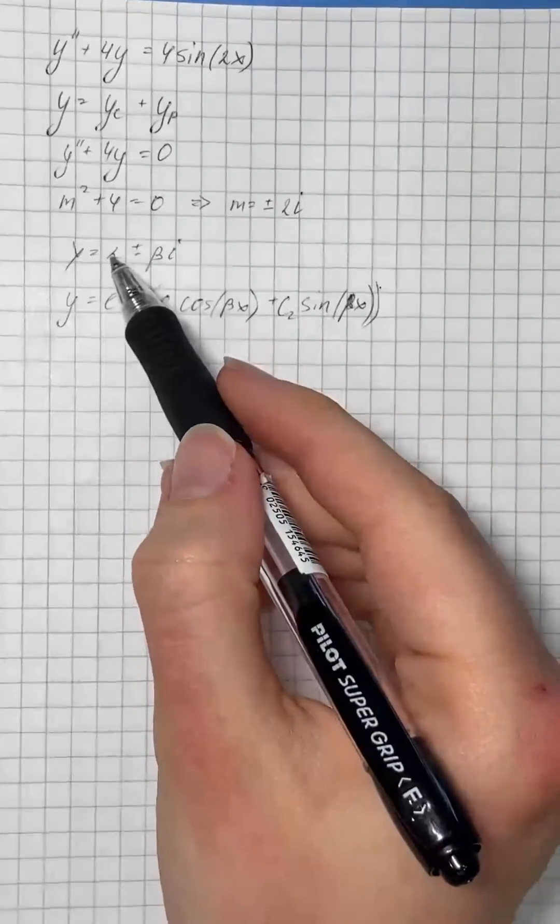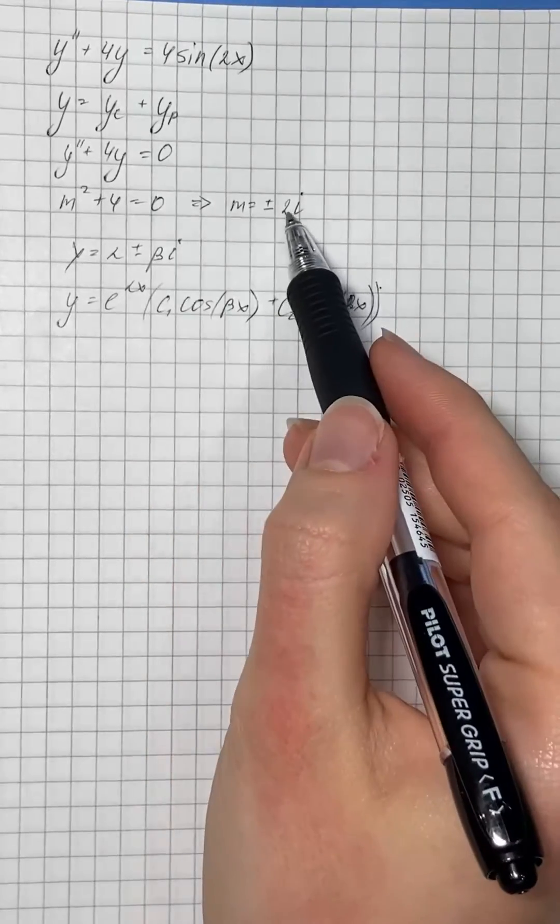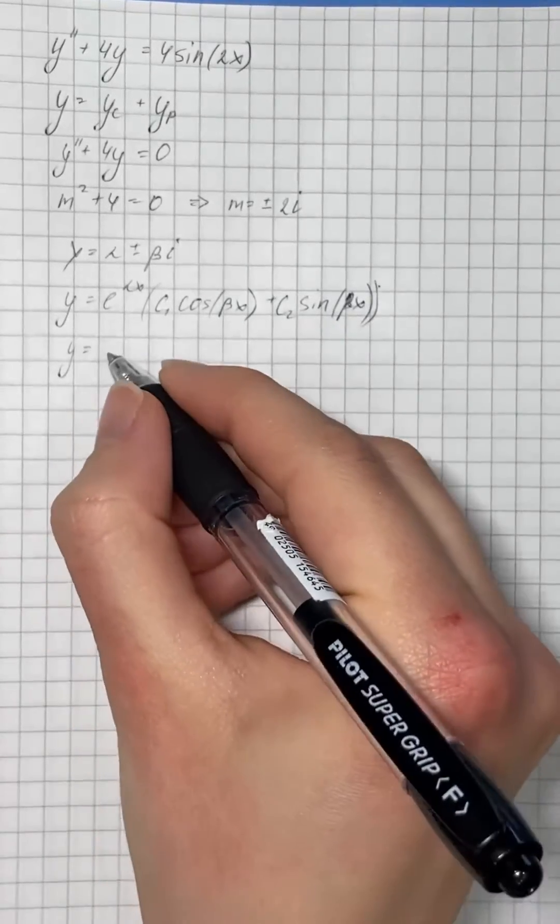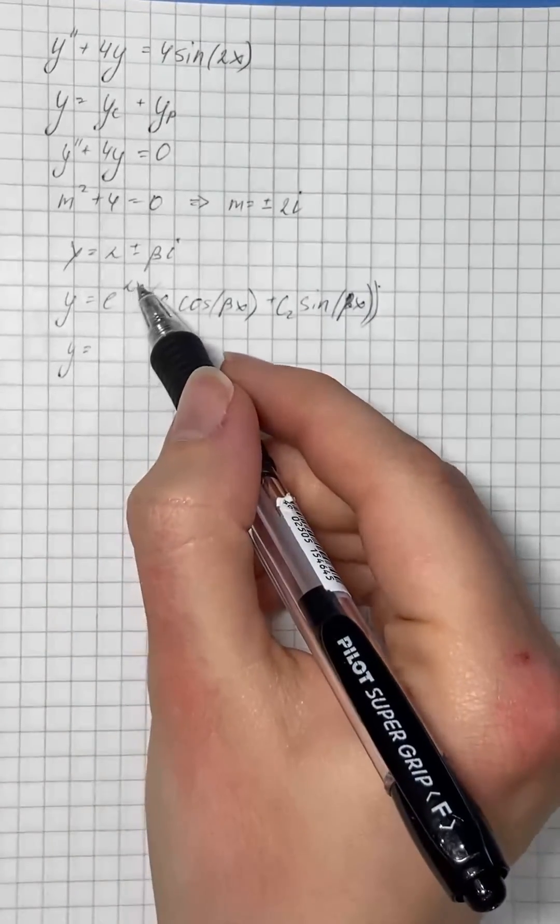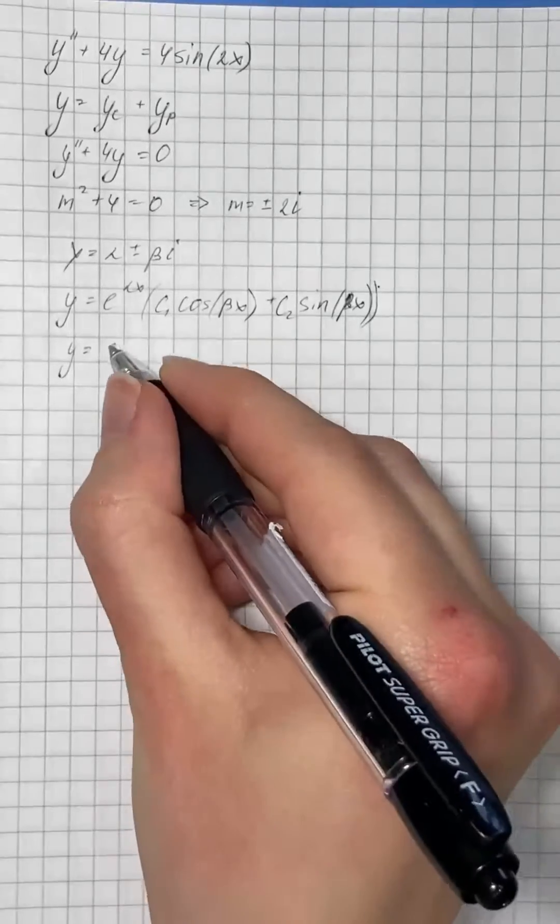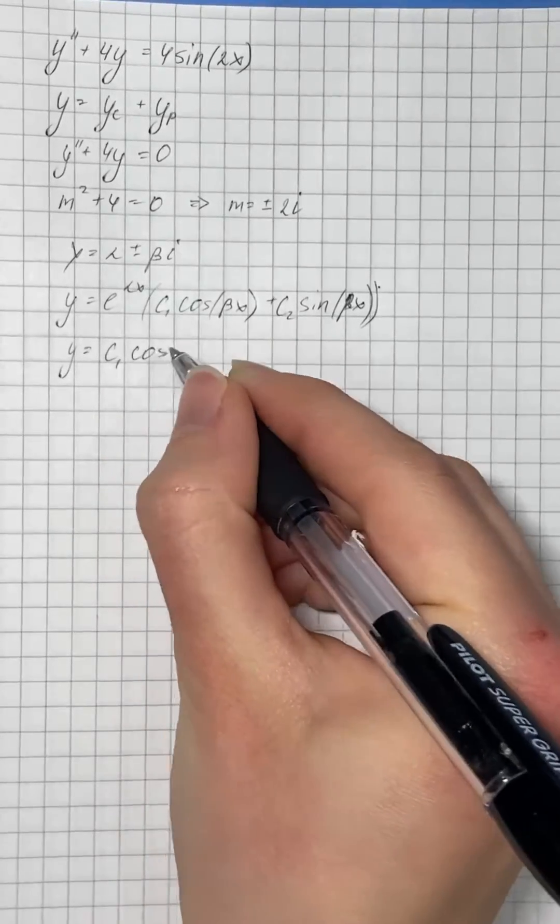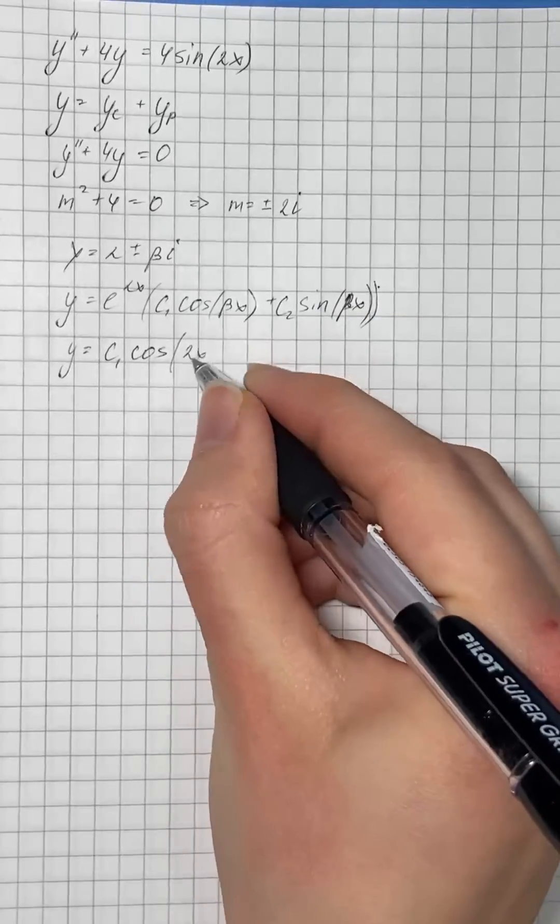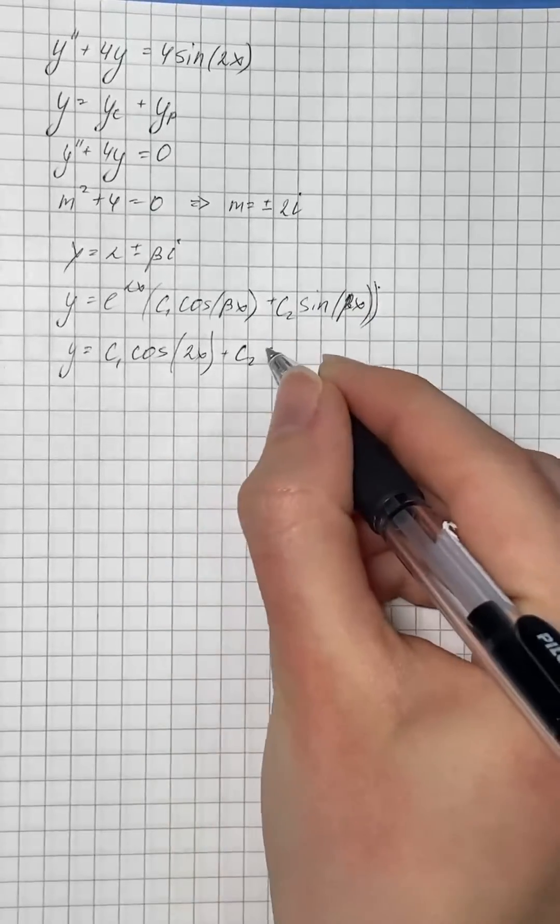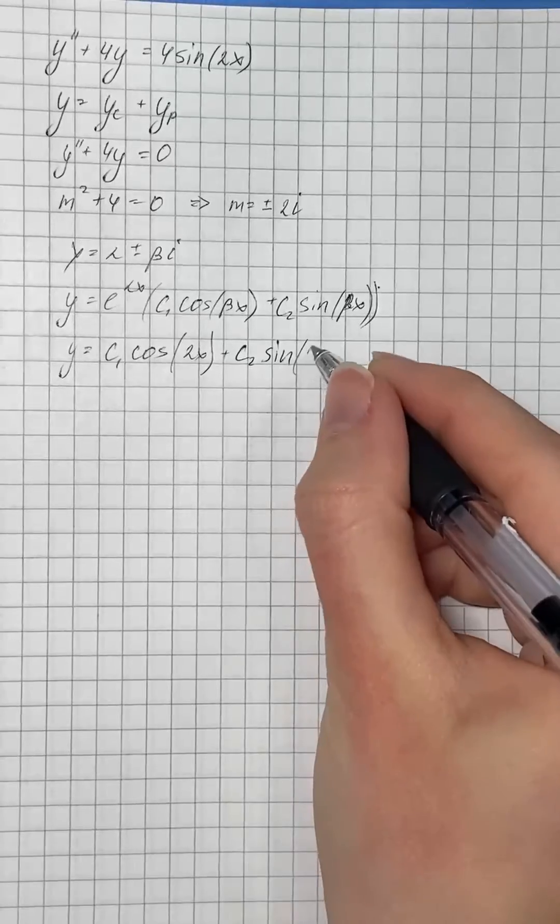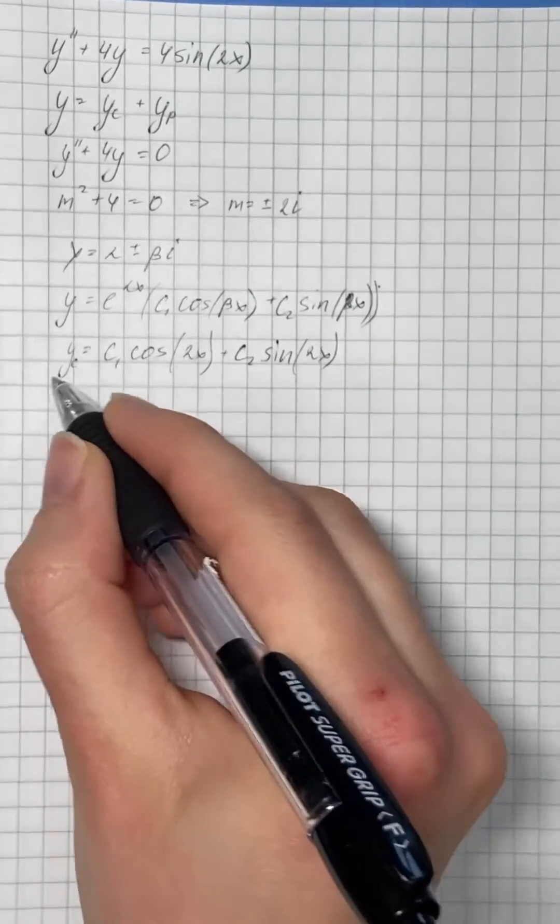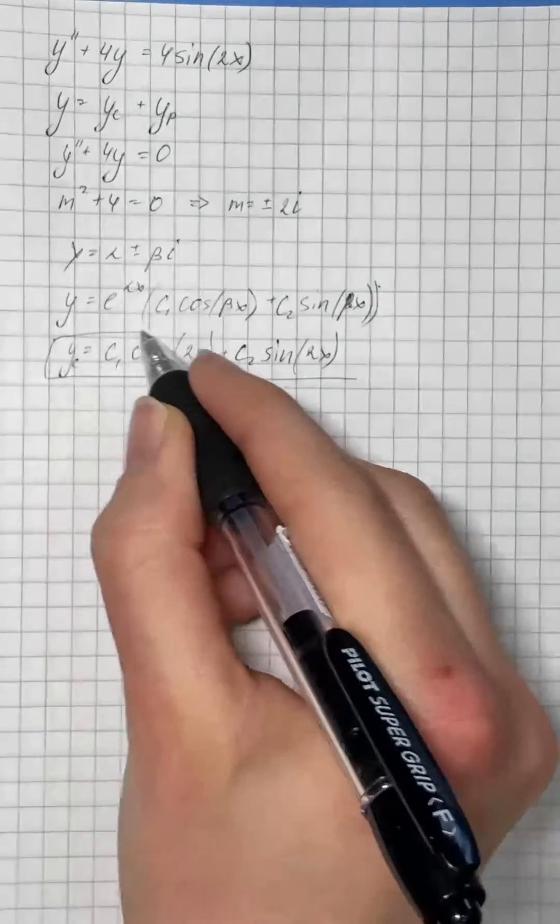We have that alpha equals zero and beta equals two. So our solution is e to the power of zero, which equals one, then c1 times cosine of 2x plus c2 times sine of 2x. That's our complementary solution.